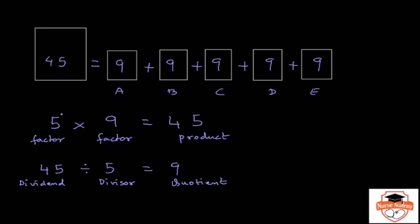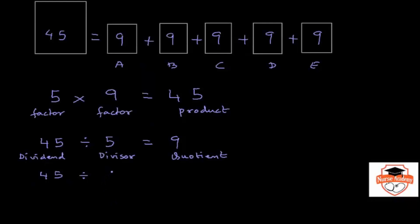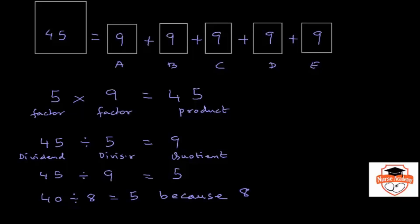Obviously, if 5 was not given and I were to ask: what times 9 is 45? You write that as a division: 45 divided by 9 is equal to 5. This is how the three numbers are related. Similarly, 40 divided by 8 is equal to 5 because 8 times 5 is equal to 40.